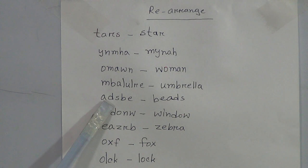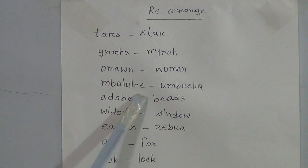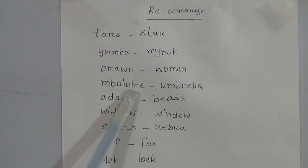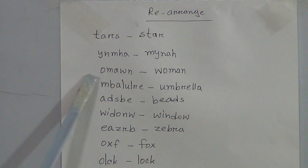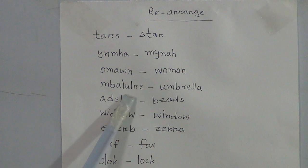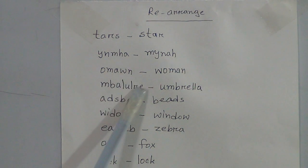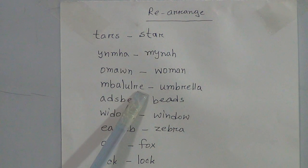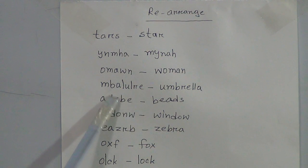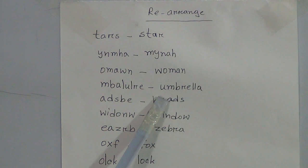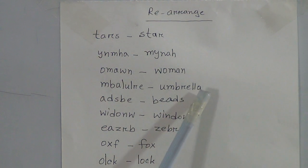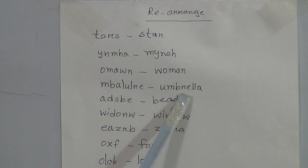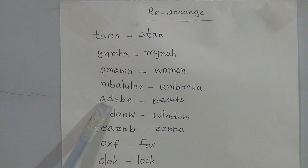Then the next jumbled letters: M, B, A, L, U, L, R, E. Dear students, I have called them jumbled letters because you can't get any kind of meaning from these letters as they are — you cannot find its meaning. But if we arrange them properly, we will get a meaningful word: umbrella. Spelling: U-M-B-R-E-double L-A, umbrella.